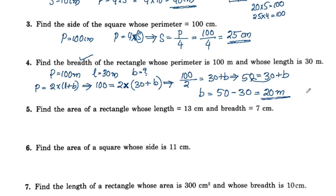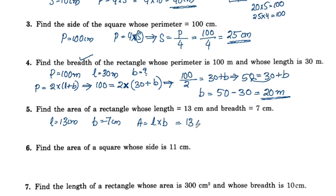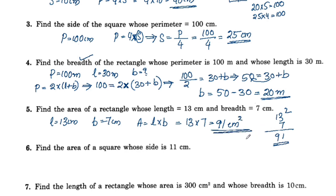Find the area of a rectangle where the length is 13cm and the breadth is 7cm. The area of a rectangle equals L times B. So area equals 13 times 7. 7 times 3 is 21, and 7 times 1 is 7, giving 7 plus 2 is 9, so the area equals 91 cm square.